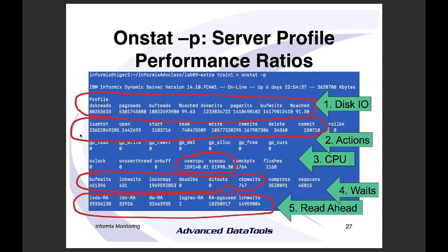The second line is what I call 'actions' — these are your transactions. ISAM actions is the total, then opens, reads, writes, rewrites (updates), deletes, and commits. Commits is a key one I watch because it tells me how many transactions I'm doing per hour.